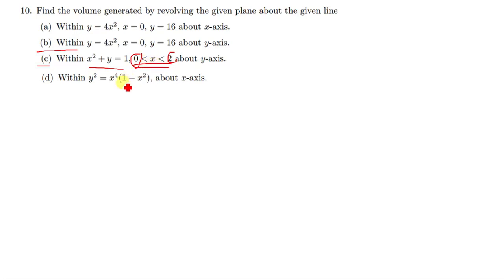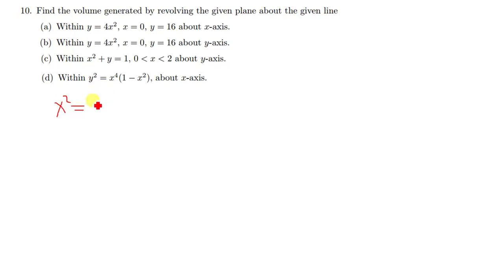Since there's no y yet, we need to manipulate this mathematically to change it to y. If we're integrating about the y-axis, we need to make x squared the subject. When we make x squared the subject, we get x squared being equal to 1 minus y. Now it's just a matter of integrating — this is already squared, so we just need to find the integral.